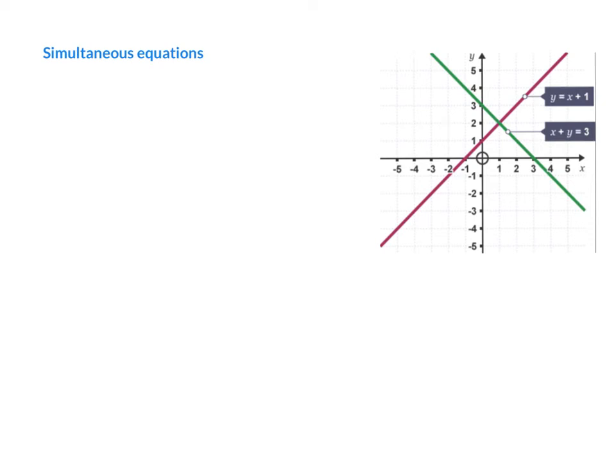In today's video I'm going to be talking about simultaneous equations. The first thing to be aware of is we are generally trying to find two unknown values, for example an x and a y value. To find these values we need two equations, and these two equations are known as simultaneous equations because they are both true at the same time.